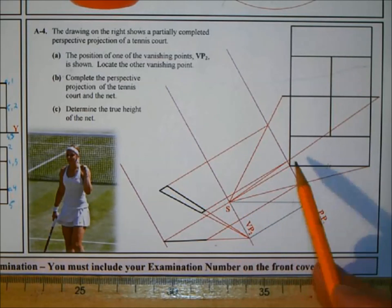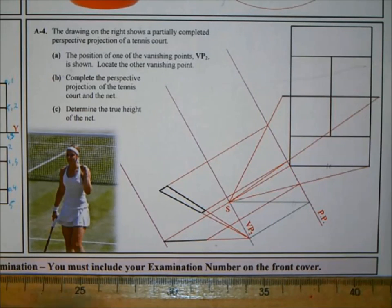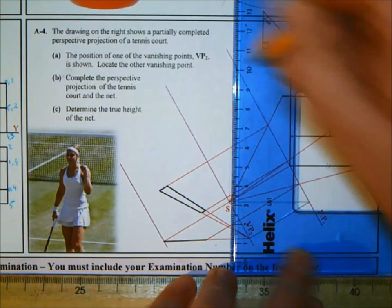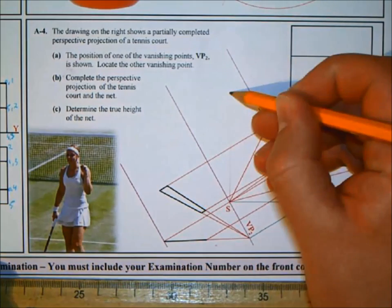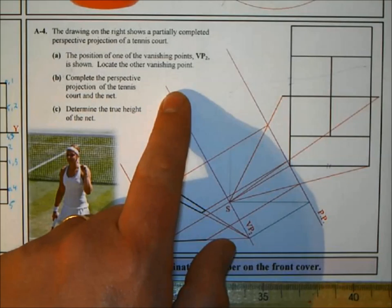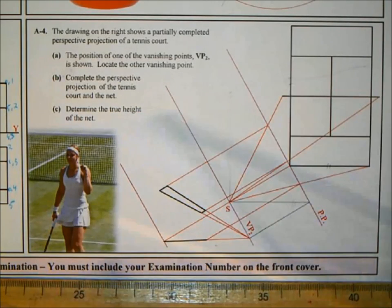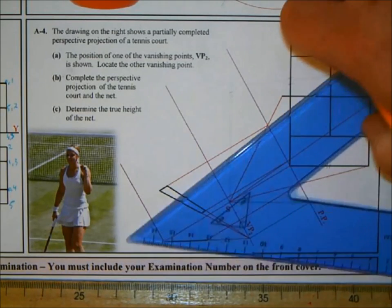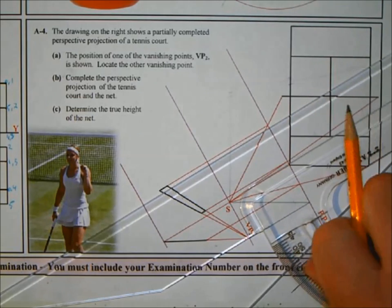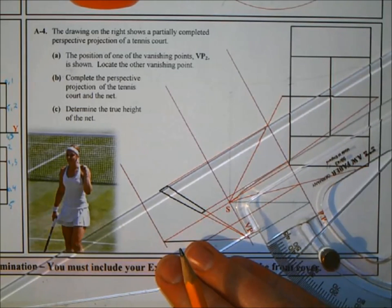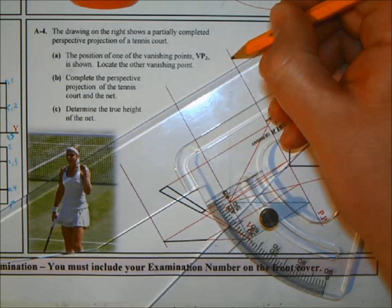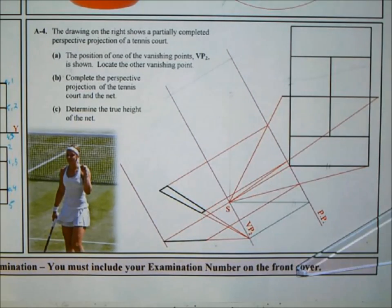To get VP1, we draw a vertical line from the spectator straight up, parallel to that edge of the court. Then project it down at the same angle as the projection angle to find VP1. Using the adjustable set square, this is where it crosses the picture plane — bring it down to the horizon line and that is VP1. Part a, locating the other vanishing point, is done.